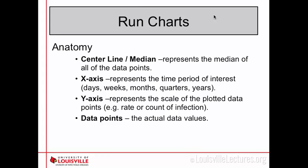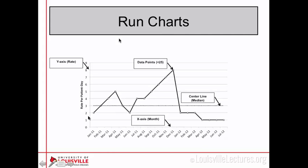Your y-axis is going to be your rate — either an infection rate or a percentage rate — and your data points are your actual data values. If you see on this chart, this is your center line, and you have data points that are fluctuating around that line. A run chart has several rules to detect what's considered normal or abnormal variation.